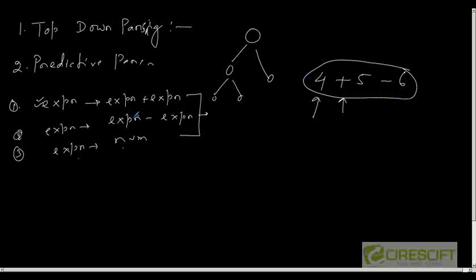While deriving from the given grammar, I can always create the parse tree, and that is why it is called predictive parsing. My prediction may be wrong or right — I don't know — but I have to predict on the basis of the current input and the current non-terminal I am processing.